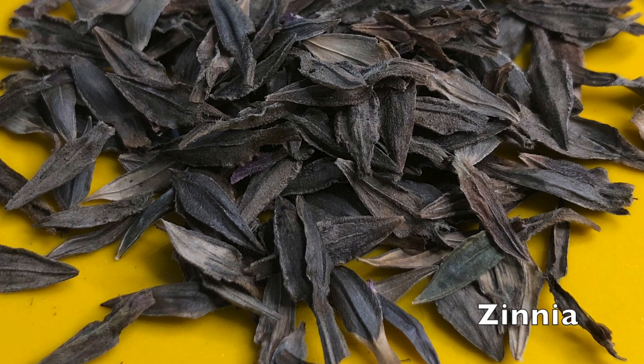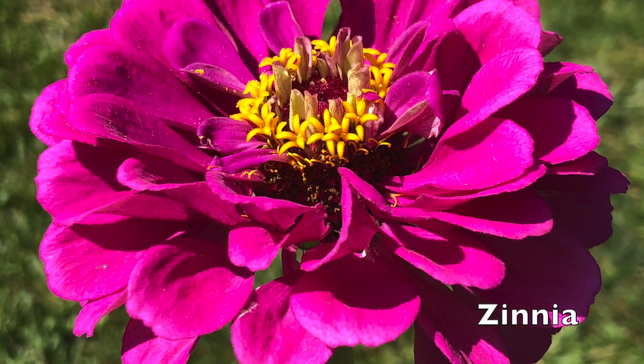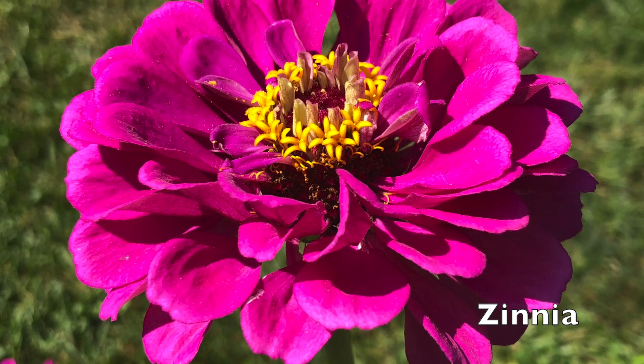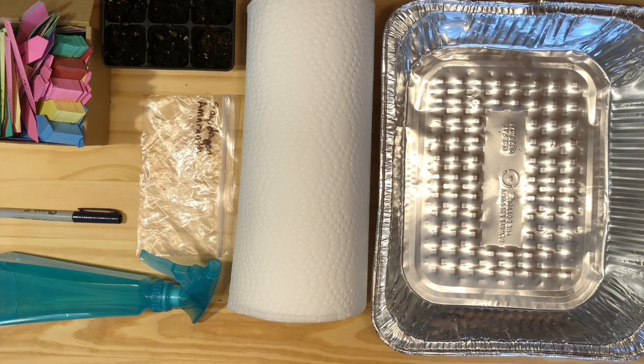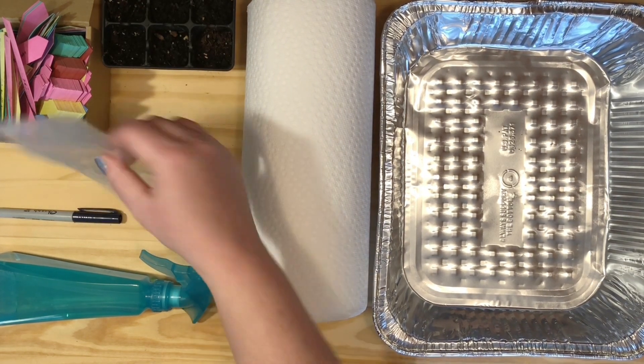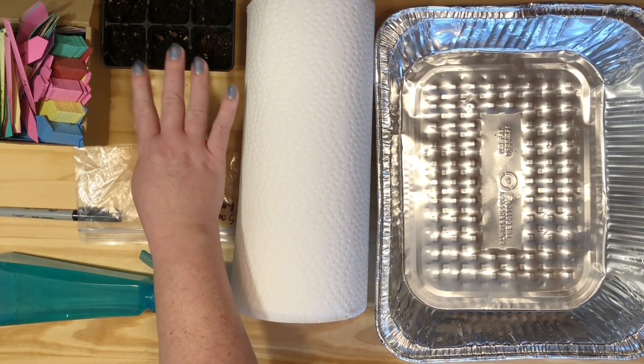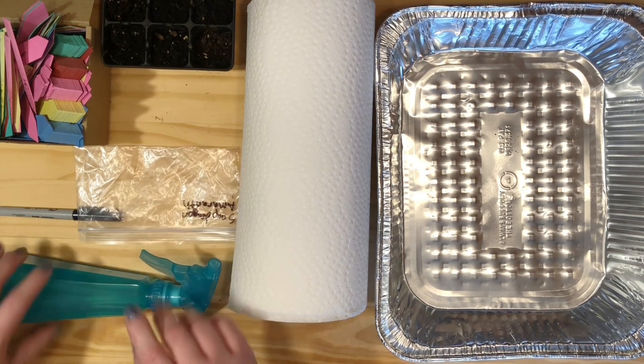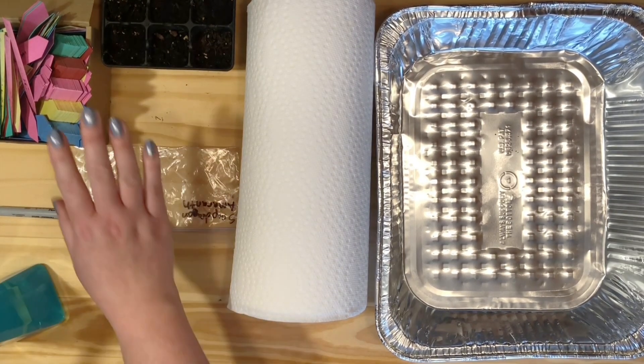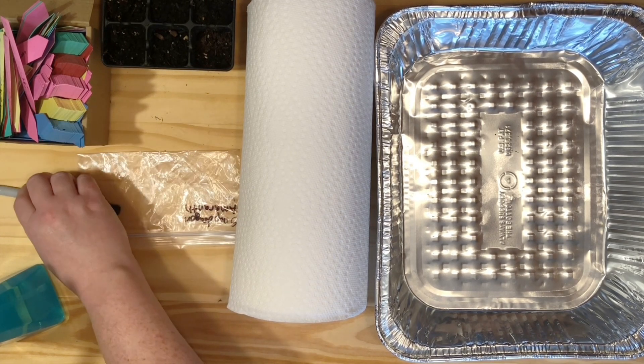There are several different ways to do germination testing. You can use soil or paper towels. Depending on which method you use, some of the supplies you might need include paper towels, plastic baggies or another container, or your seed starting containers with your planting mix. You'll also need some water and some way of labeling your seeds, like a marker or plant labels, and of course your seeds.